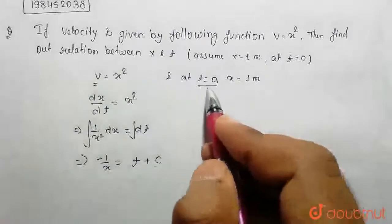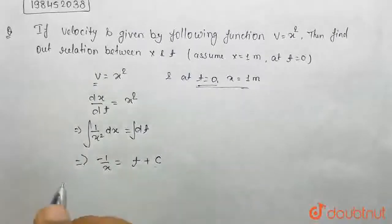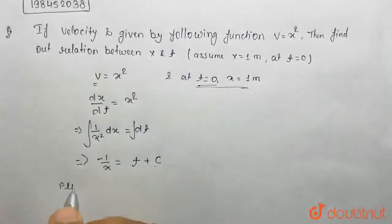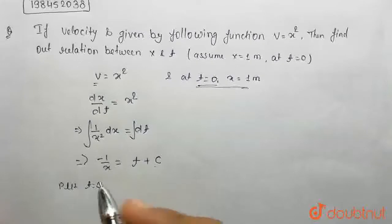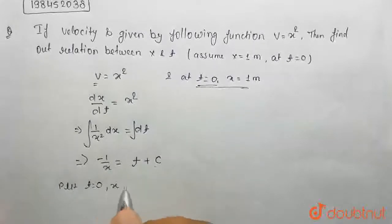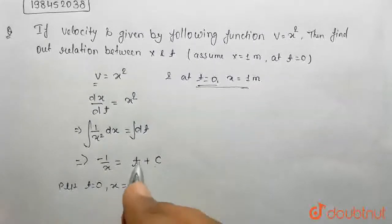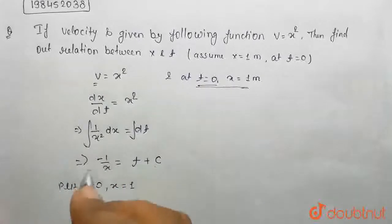To find the value of c, we'll use this parameter. Put t is equal to 0. So, x value will be 1. Put t is equal to 0.